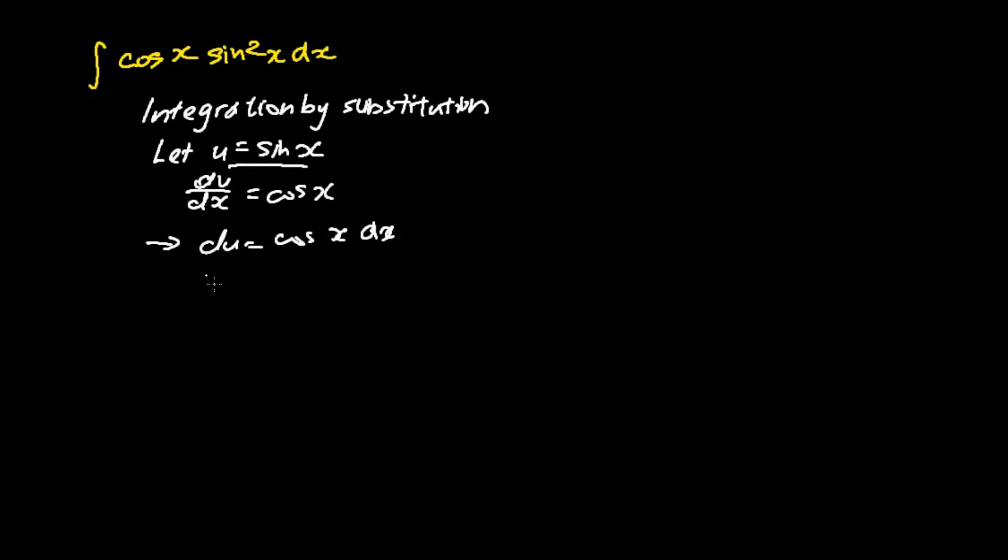So I have my u and my du, I can proceed on to substitute. So my sine squared x is basically just u squared and my cosine x dx is du.